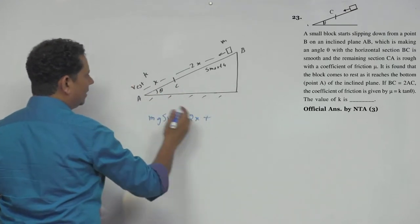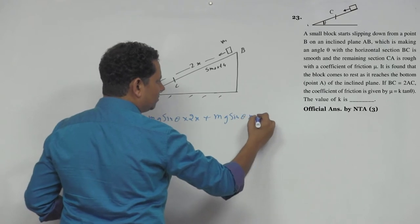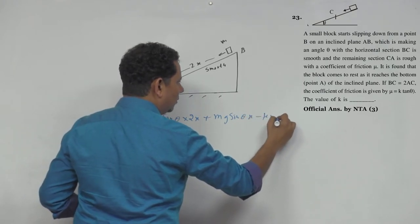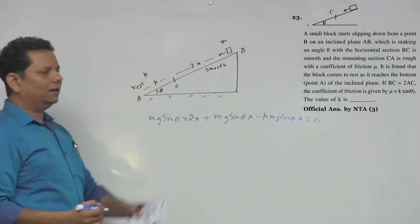And x displacement, minus mu Mg cos theta times x. Now this will be equal to 0.